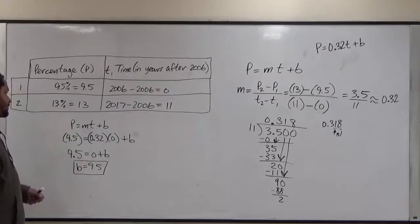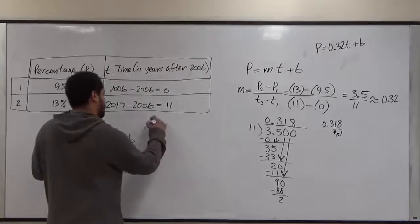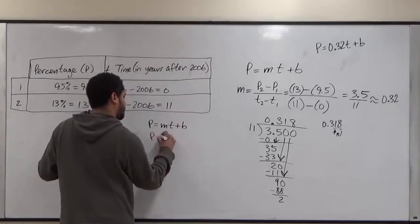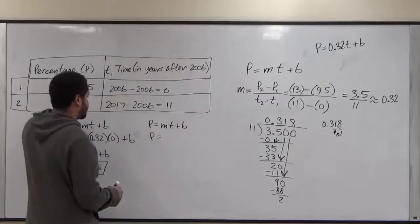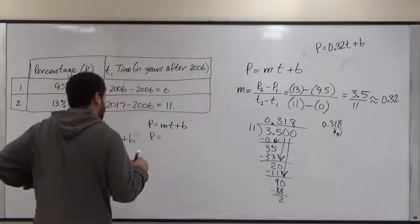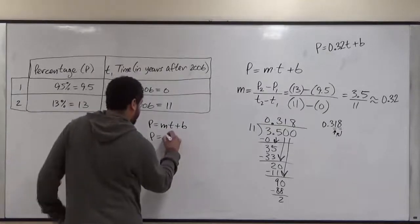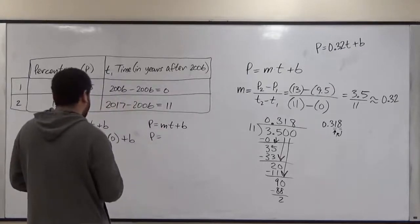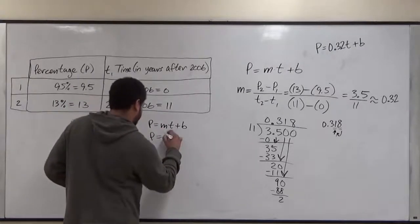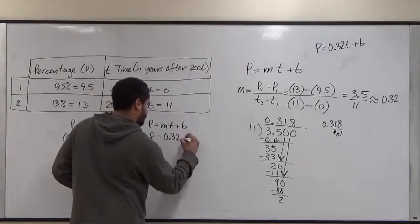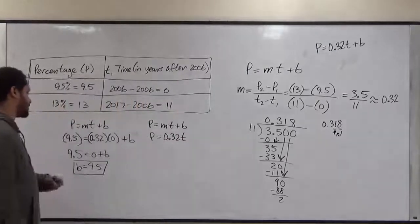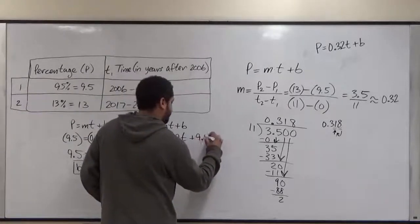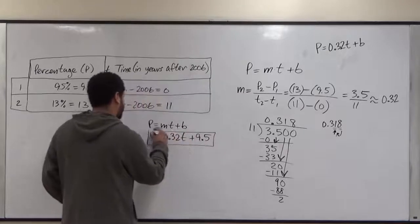Since we have the 9.5 already, we could put it back together into the linear model. So we have p equals m t plus b, where the p is the percentage of the Asian international students at BMCC. The m represents the linear growth per year. And this is going to be 0.32 times t. And the b is the y-intercept, which is just 9.5. So we're just going to add the 9.5. Now this would be the linear model of the equation.